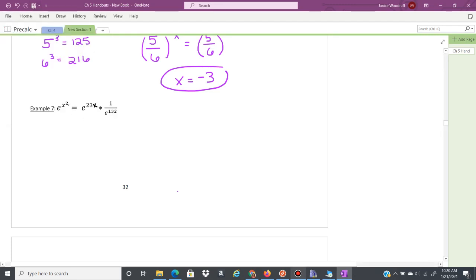So what we had already established was that we have this 1 over e to the 132, which means this was a negative exponent that brought this down to the denominator. So we're gonna rewrite this with positive exponents. We're gonna have e to the x squared, e to the 23x,